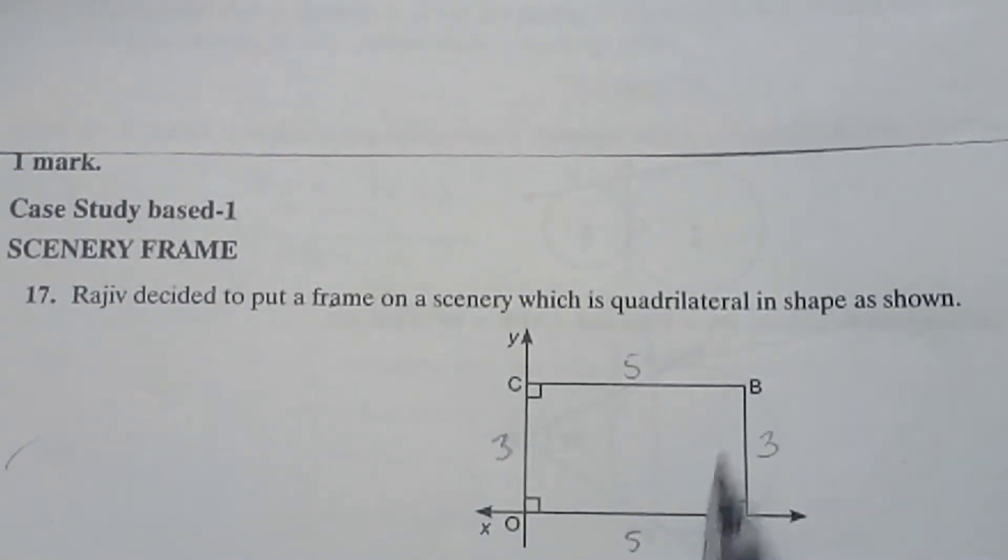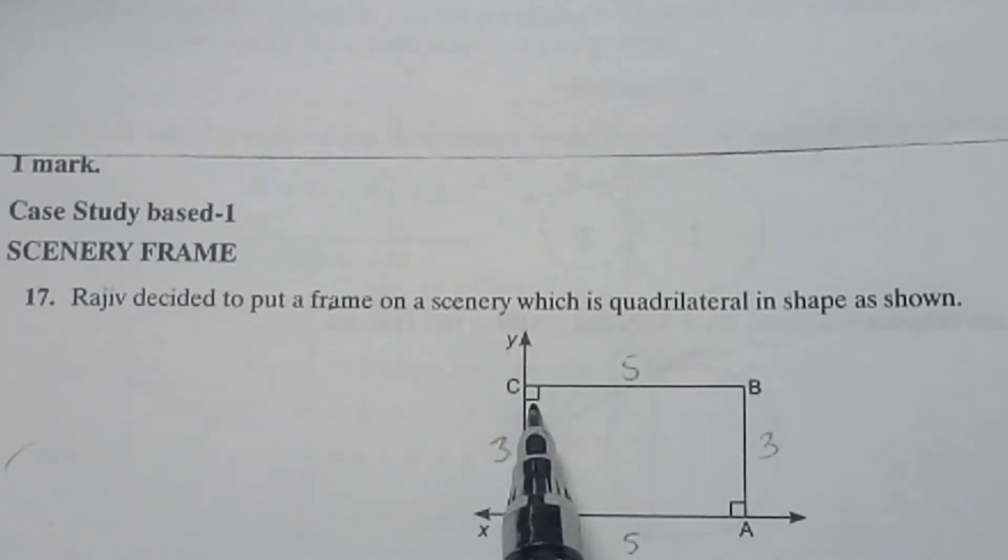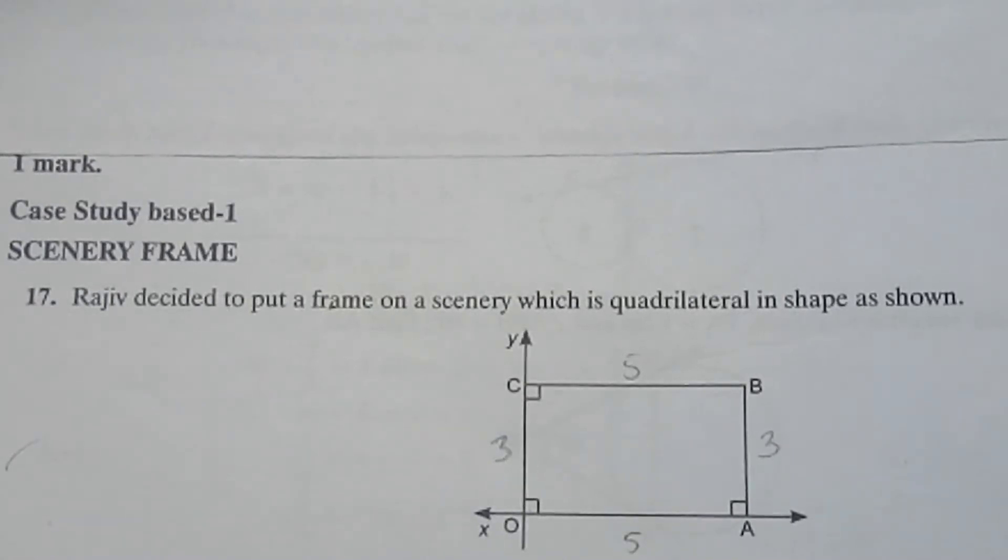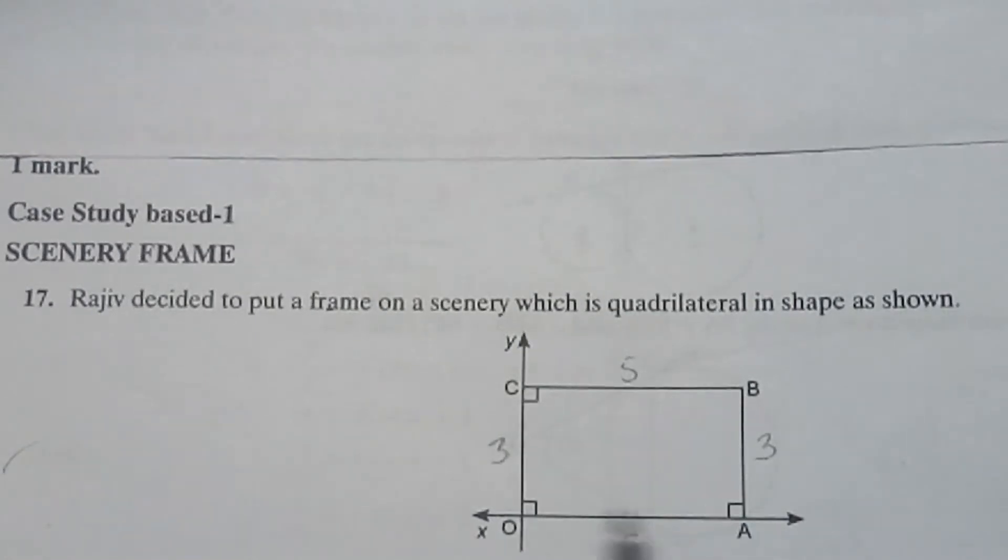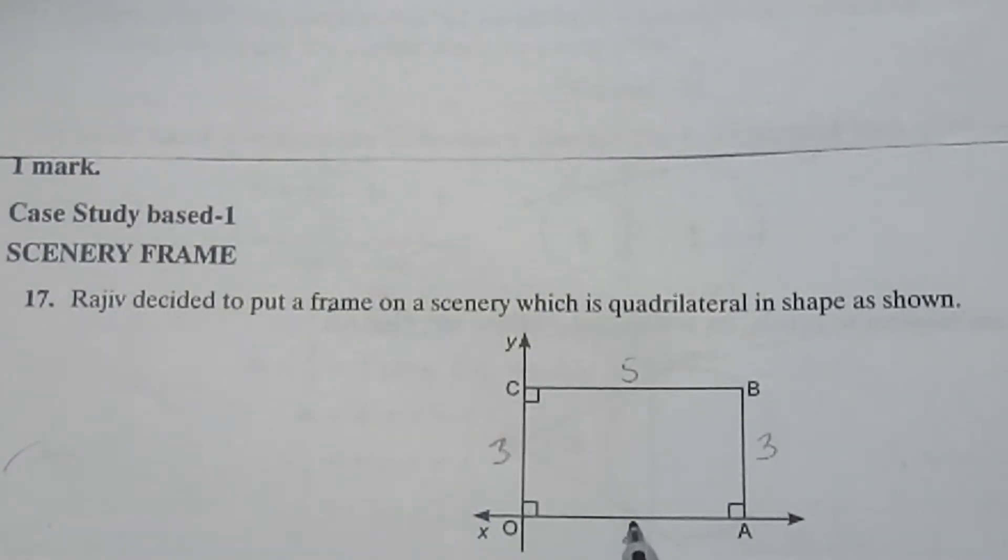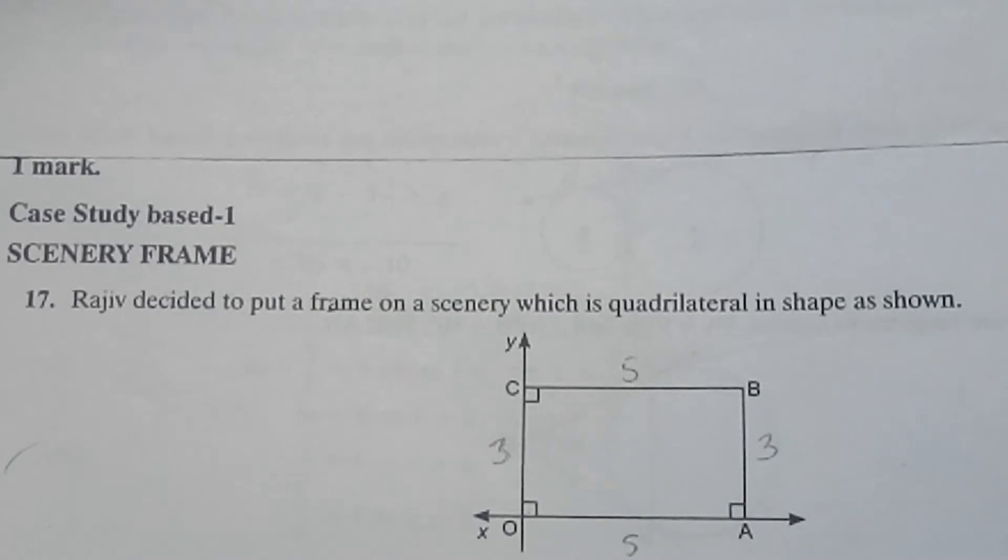Because here all angles are 90 degrees, you can see here this angle is 90 degrees. Angle A is also 90 degrees. Angle C is also 90 degrees. So this quadrilateral will be a rectangle. And it is also given that this OA is 5 units and OC is 3 units. So because this is a rectangle, opposite sides are equal. So OA and BC are both 5 units each and OC and AB are also 3 units each.